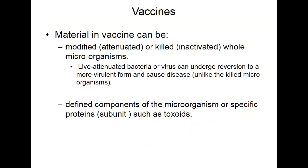Vaccines can be divided into two categories. One group consists of actual microorganisms that are either attenuated — modified — or totally inactivated and killed. Live attenuated vaccines carry risk because the bacteria or virus can sometimes undergo reversal to a virulent form and cause disease. This is a critical consideration in primary immunodeficiency. Inactivated or killed vaccines do not pose that risk.